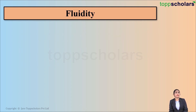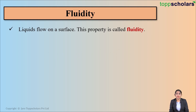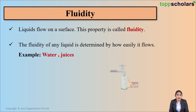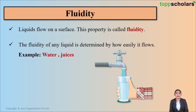The next property is fluidity. Fluidity is simply the property of liquids. Liquids flow on a surface, and this property is called fluidity. The fluidity of any liquid is determined by how easily it flows. For example, water and juices are examples of fluid substances.